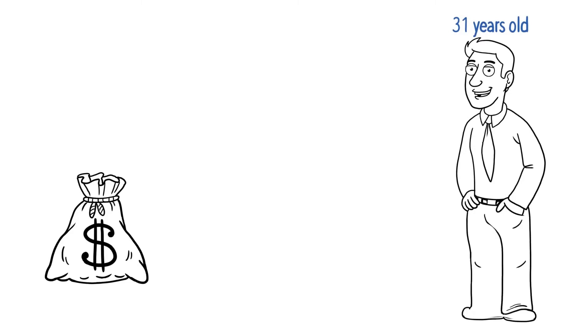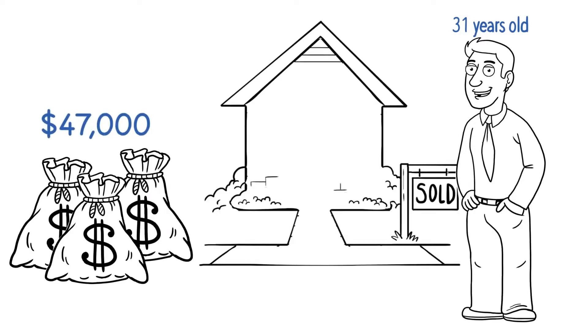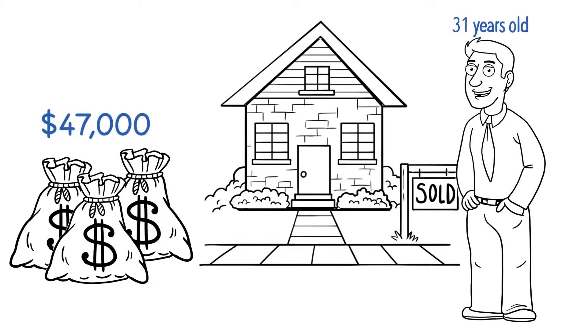When your child is 31, the projected cash value will have grown an additional $47,000. That's a lot more than they'd get from mattress money.